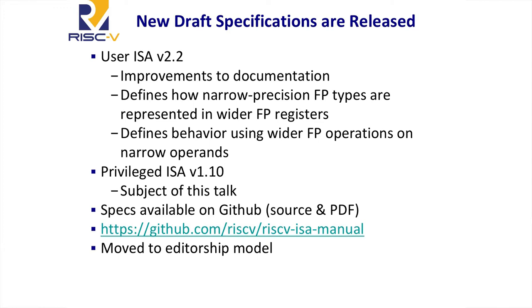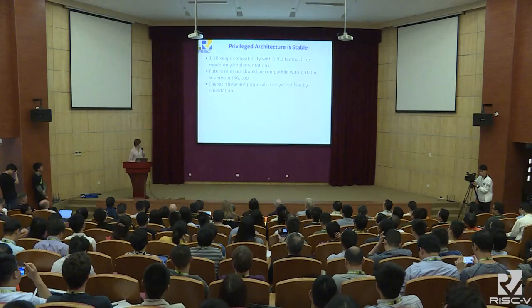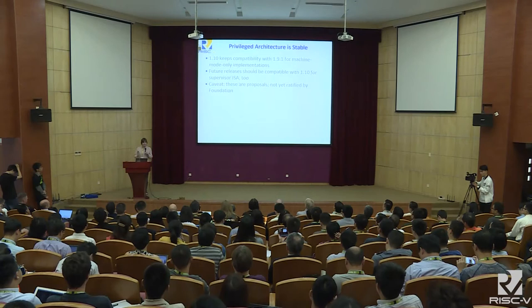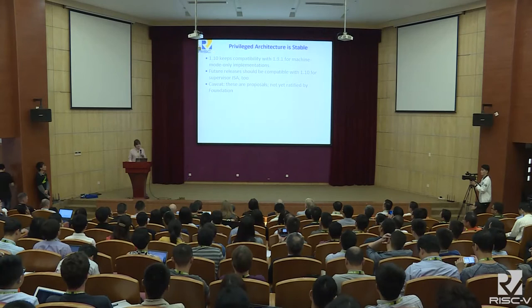The biggest news today is that we are declaring the privilege architecture to be more or less stable. We've kept compatibility with version 1.9.1 for machine-mode-only implementations, so there are no backward-incompatible changes for simple microcontrollers running only in machine mode. From this version on, we're also pledging to maintain the same for the supervisor ISA, so implementations made to this standard should be compatible with software written against future versions. One caveat: these are still technically proposals — the RISC-V Foundation has to ratify them, and we hope they go through with only minor modifications.